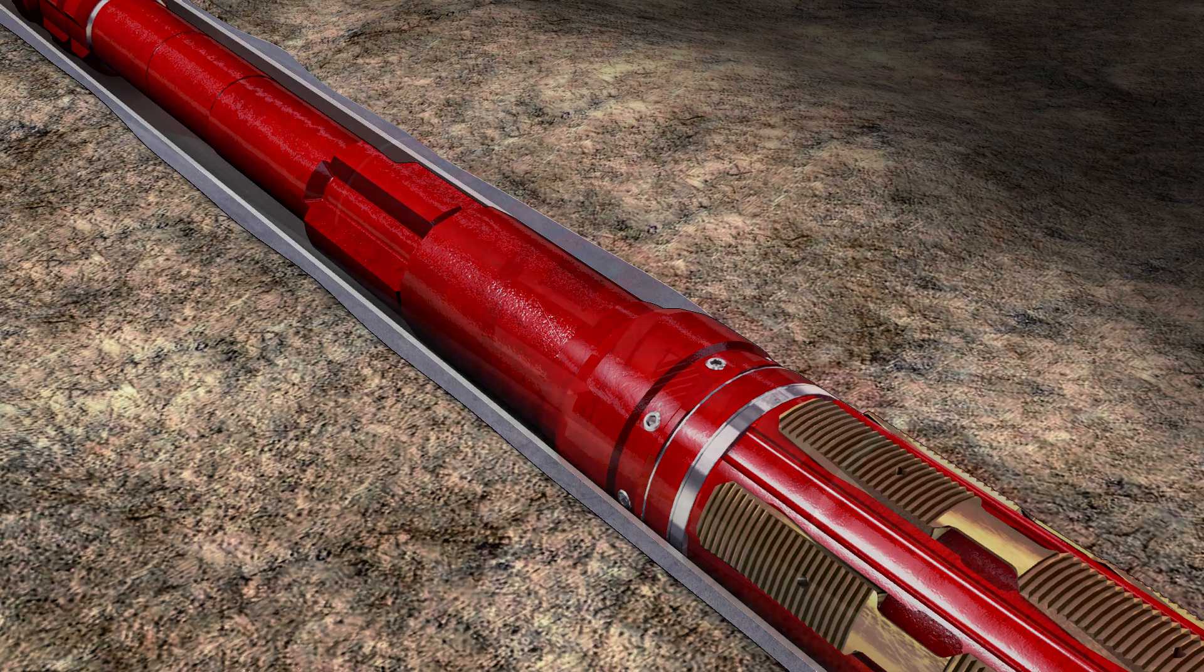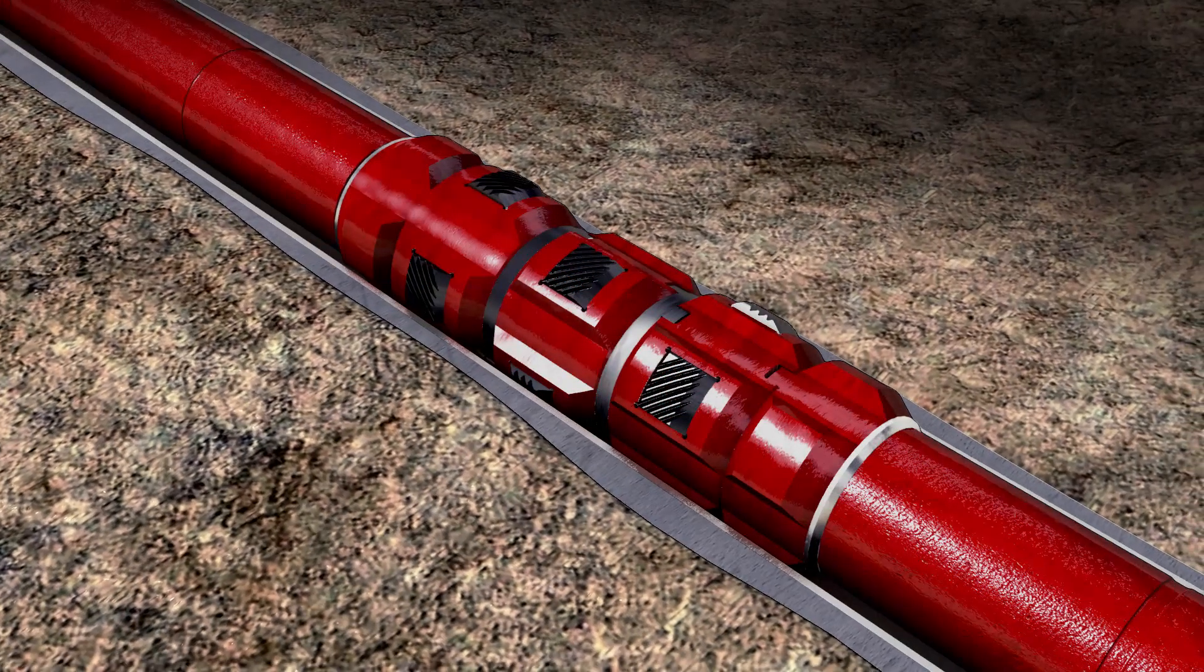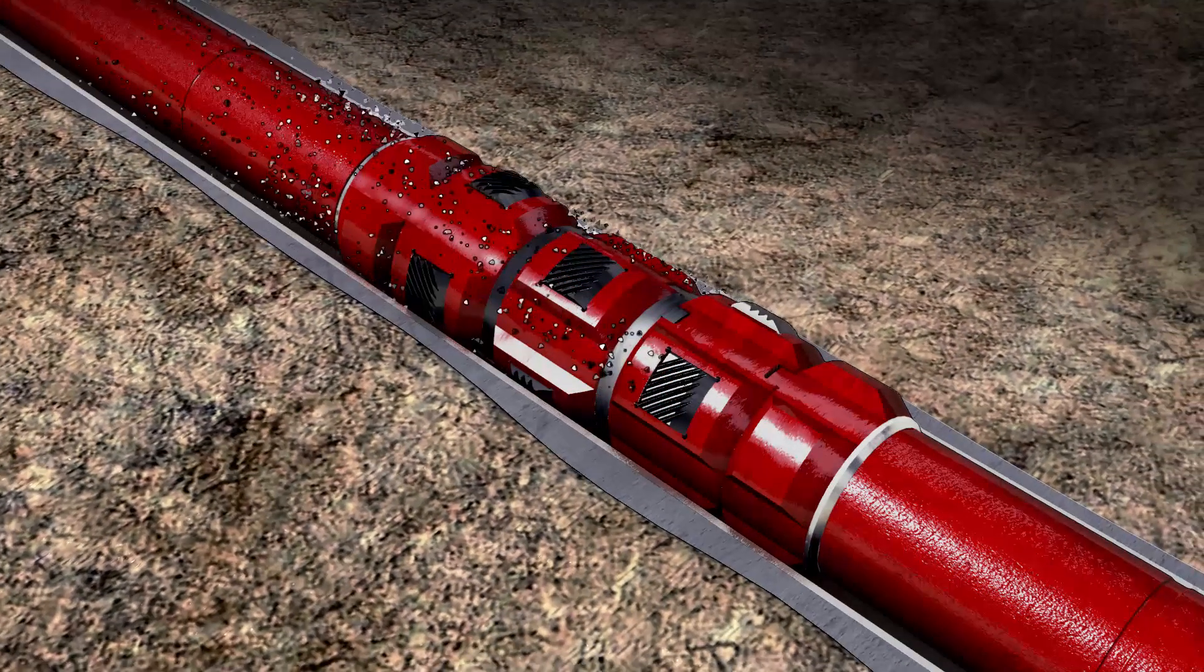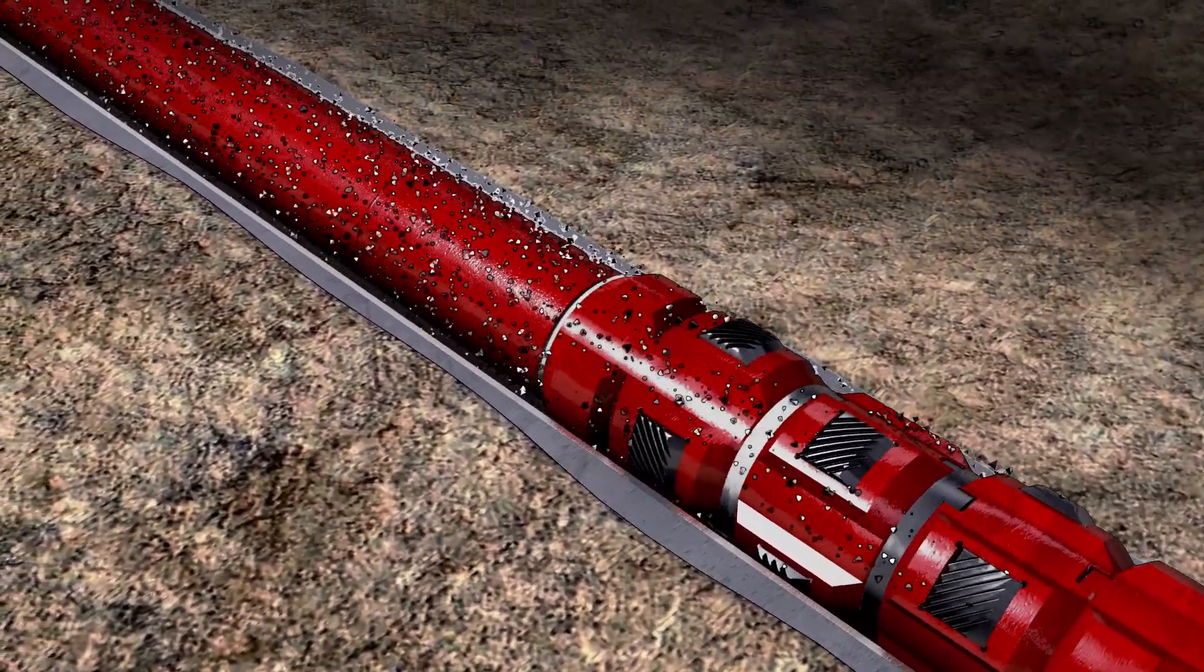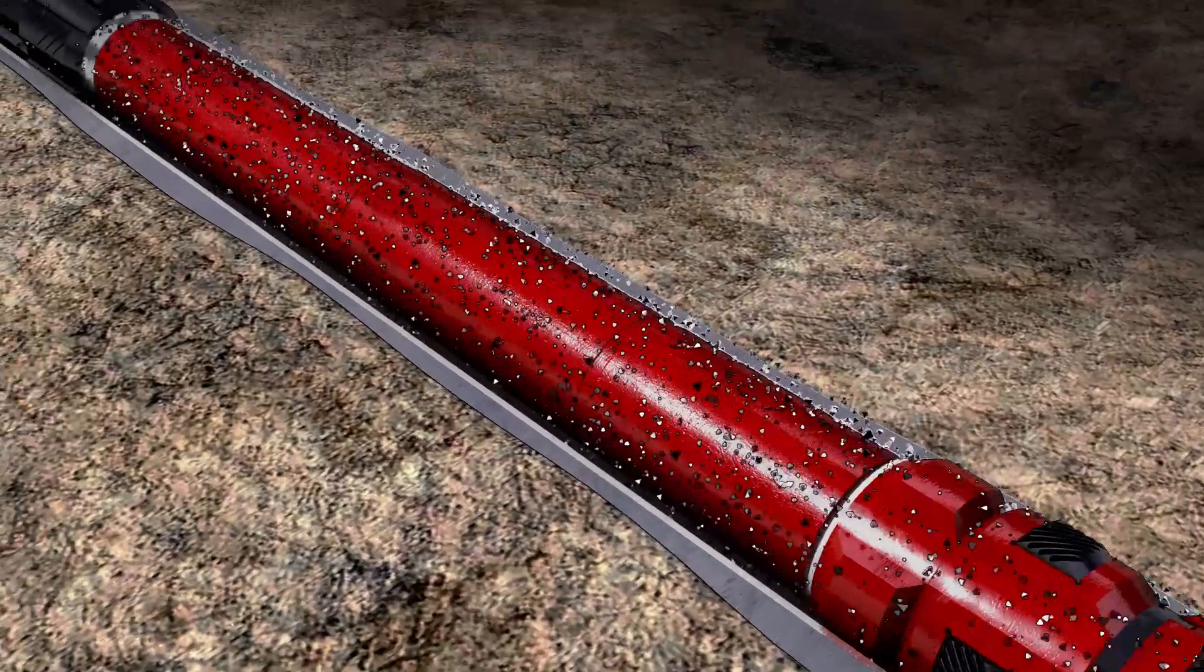In this configuration, a junk mill spearheads the set of tools, which improves the ability to reach total depth by allowing the string to work past restrictions if required. A Max Blade scraper removes debris from the casing walls.